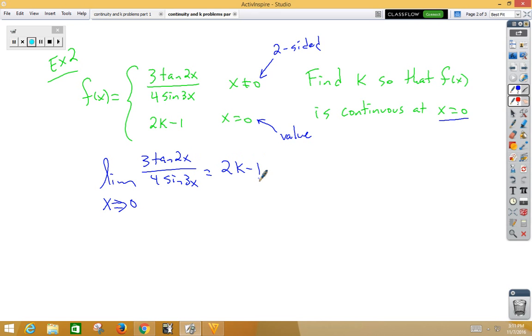Well, we've done this problem several times now, and we know that there's a shortcut. The shortcut is if we multiply the 3 times the 2, we're going to get a 6 on top. If we multiply the 4 times the 3, we're going to get a 12 on the bottom. Now, this works with sines and tangents as we're approaching 0. So I have 6 twelfths is equal to 2k minus 1. Well, that's really 1 half is equal to 2k minus 1.